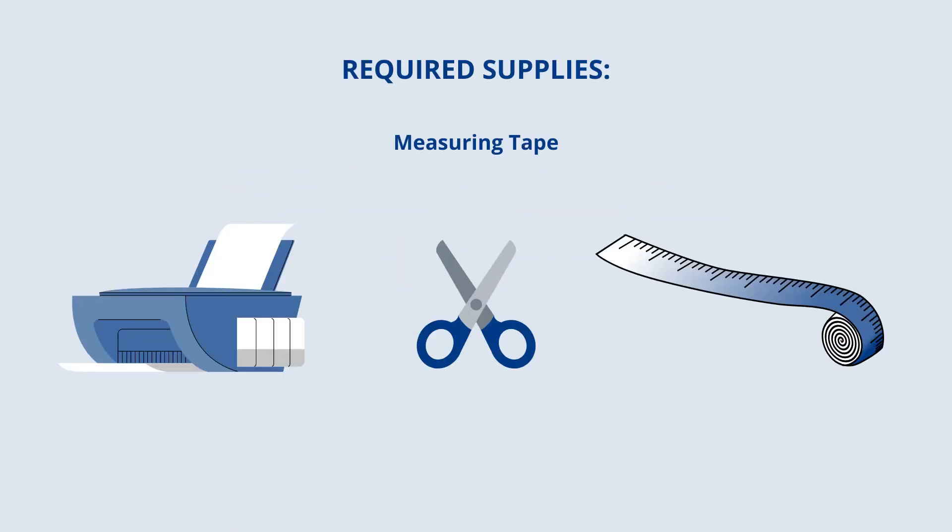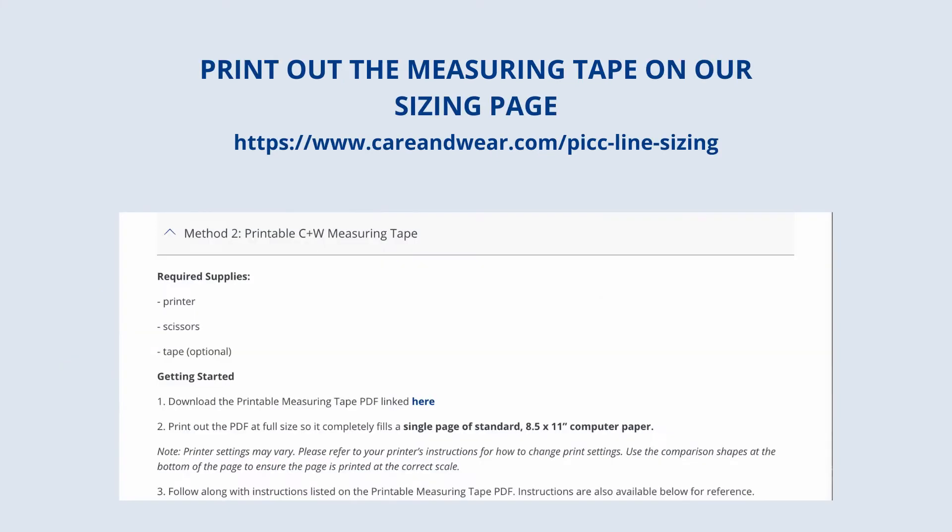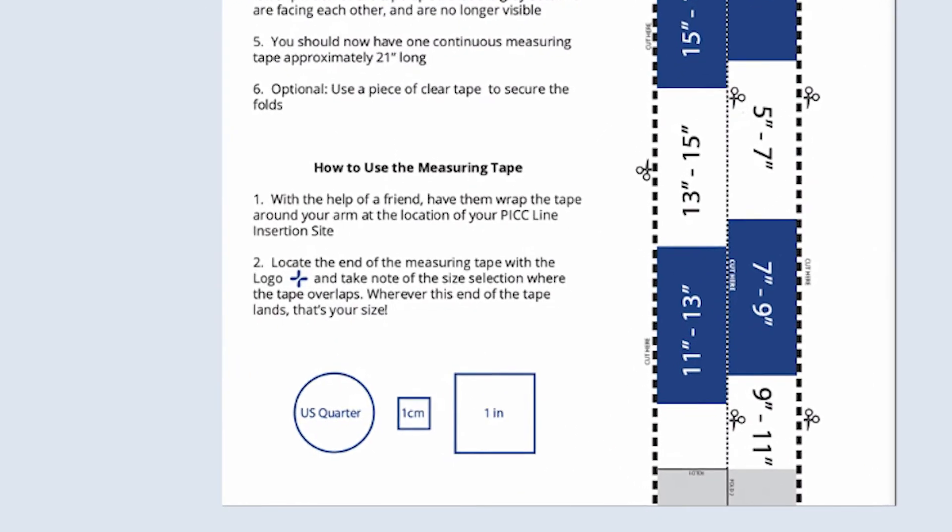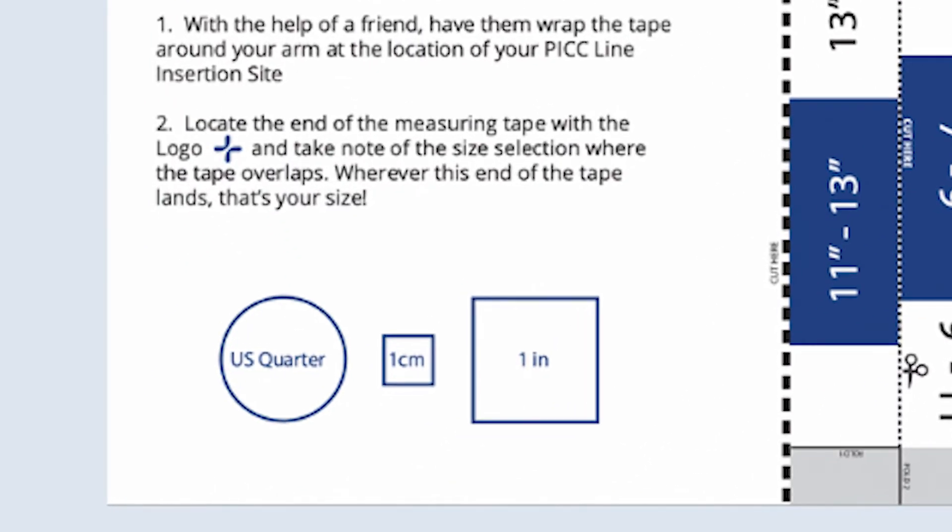To get started with our PICC cover paper measuring tape, download and print out the measuring tape PDF from our website. Be sure to print it out at full size. The paper measuring tape should reach almost all the way from the top to the bottom of the page. You can use the comparison shapes at the bottom of the page to ensure the measuring tape is printed out at the correct scale.